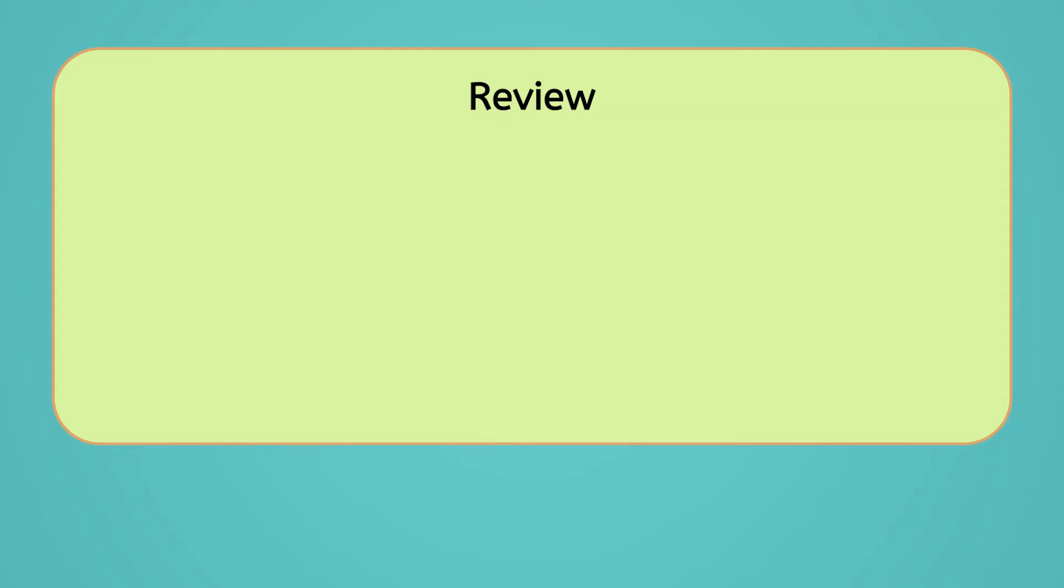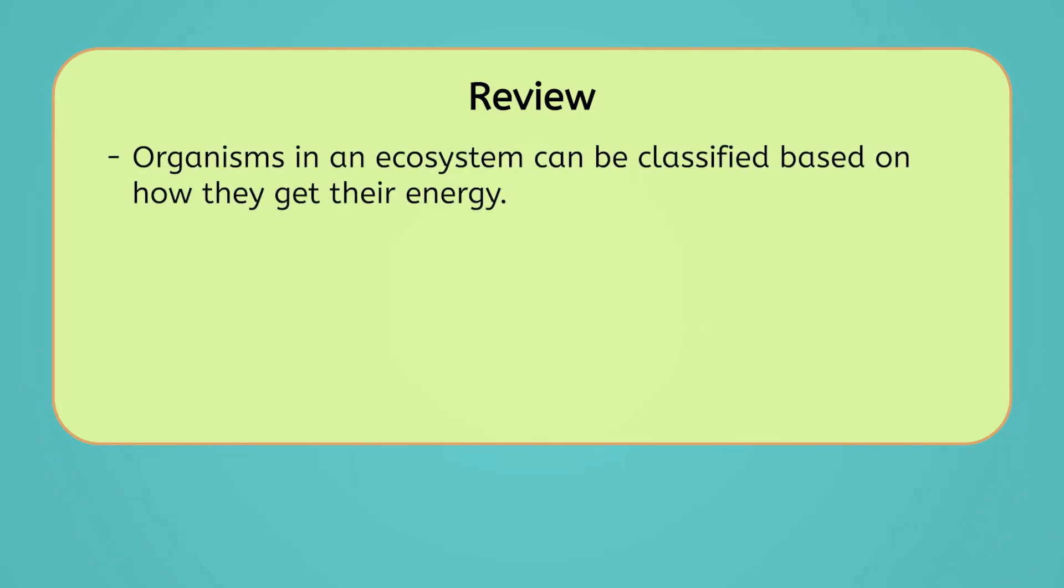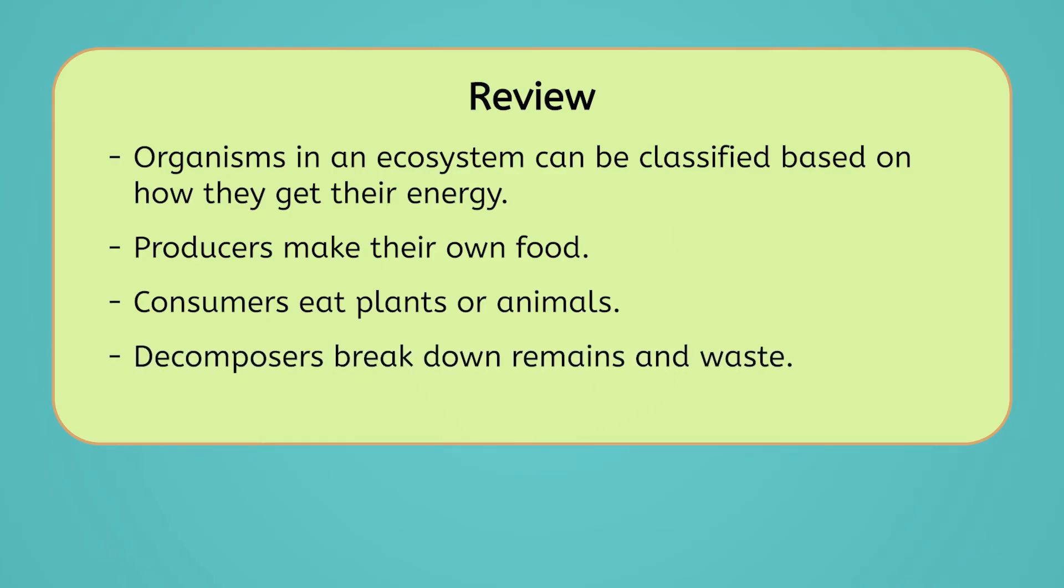Let's review everything we've learned today. Organisms in an ecosystem can be classified based on how they get their energy. Producers make their own food from the sun's energy. Consumers get their energy from eating plants or animals. And decomposers get their energy by breaking down waste products and the remains of dead organisms.